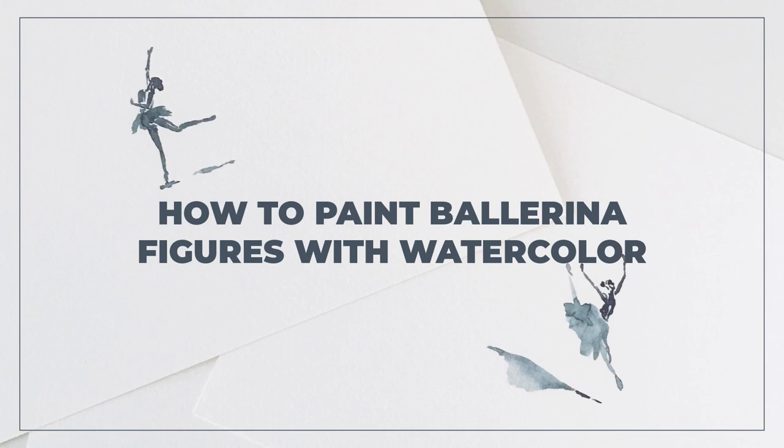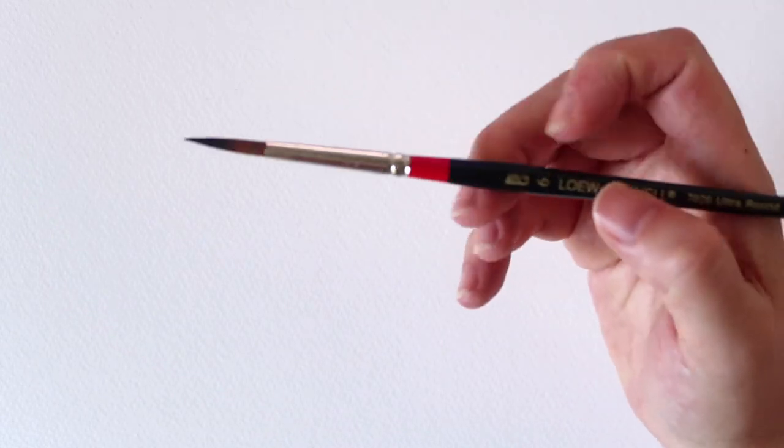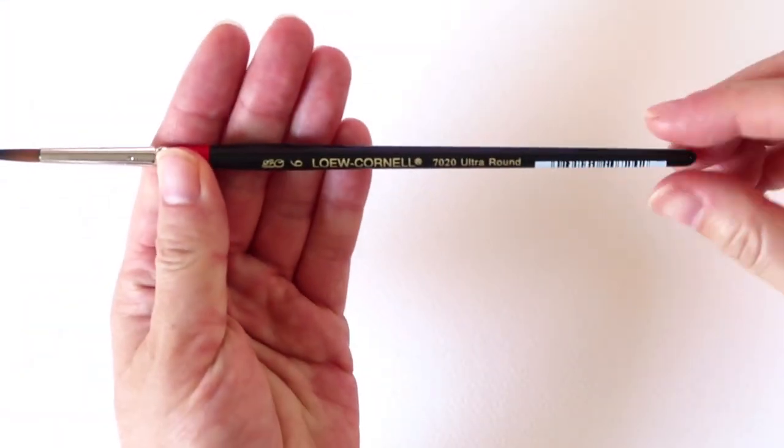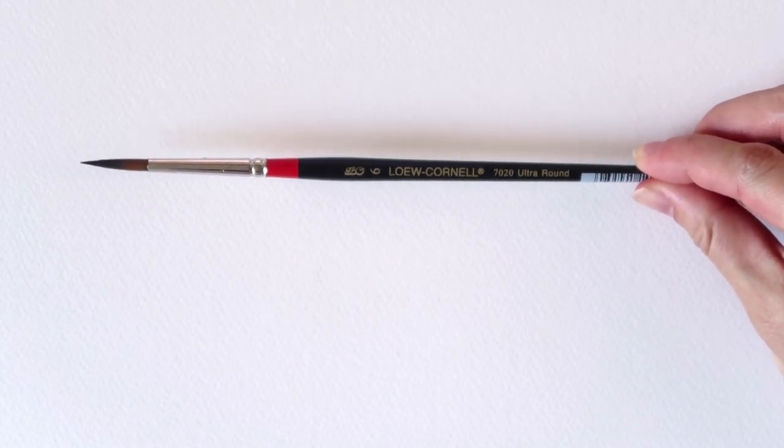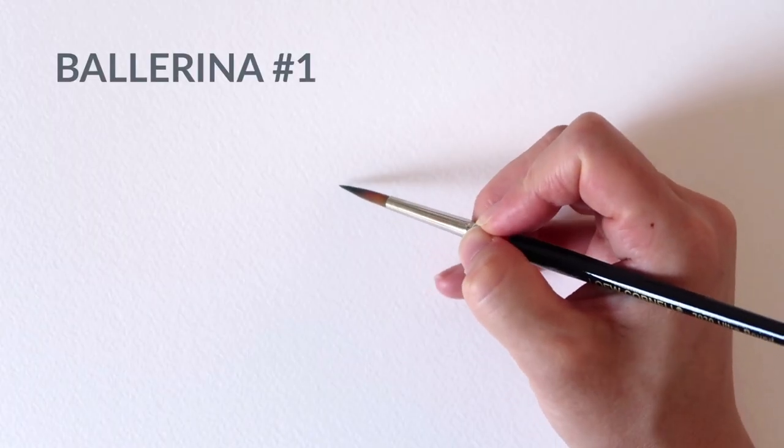In this video, I'm going to show you how to paint ballerina figures with watercolor. The supplies I'm using are cold press watercolor paper, this size 6 Cornell ultra round brush, and the color is Payne's Gray by Daniel Smith.